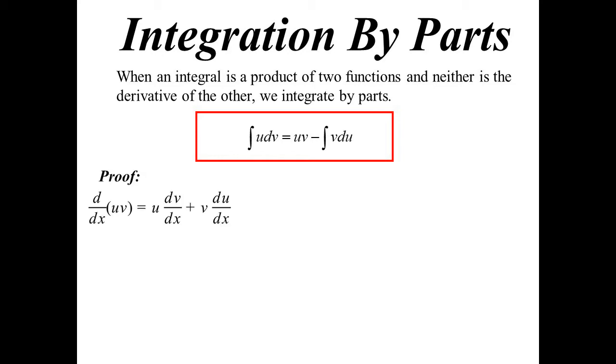Let me prove it. If I was going to differentiate uv with respect to x, so u and v are both functions of x, then I'd use my product rule. Write down the first u, differentiate the second dv/dx, plus write down the second v, differentiate the first du/dx. So that's our product rule.